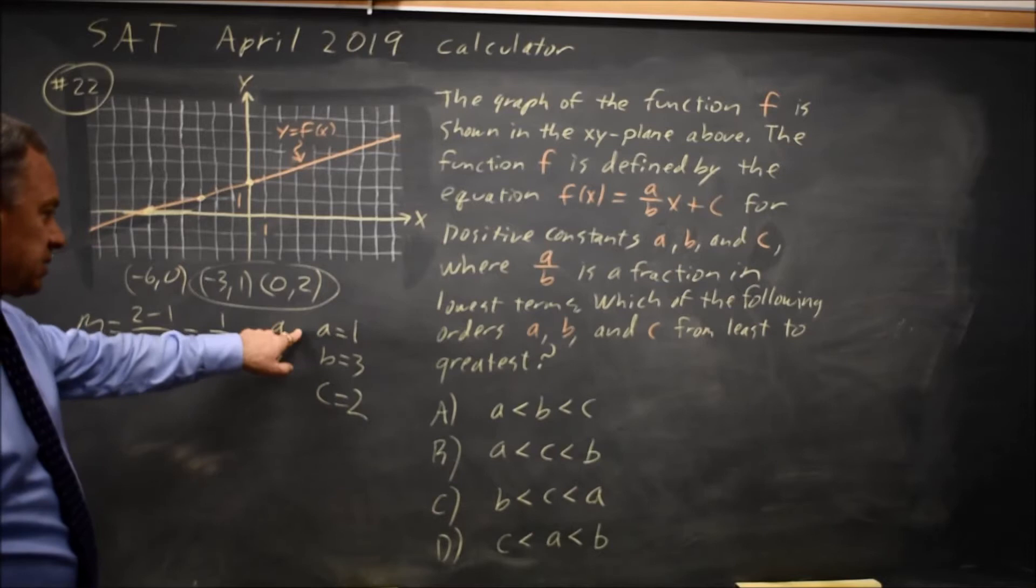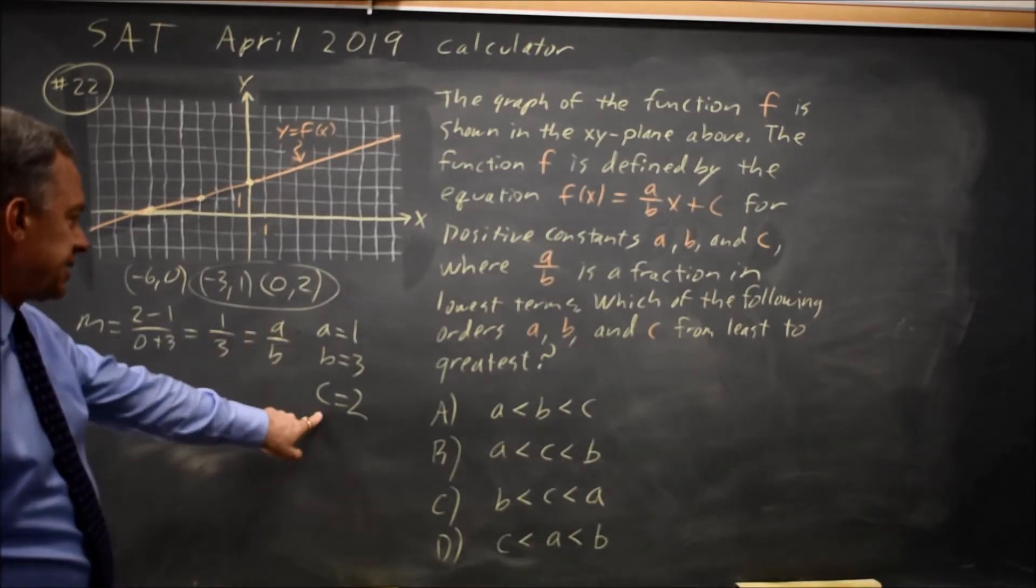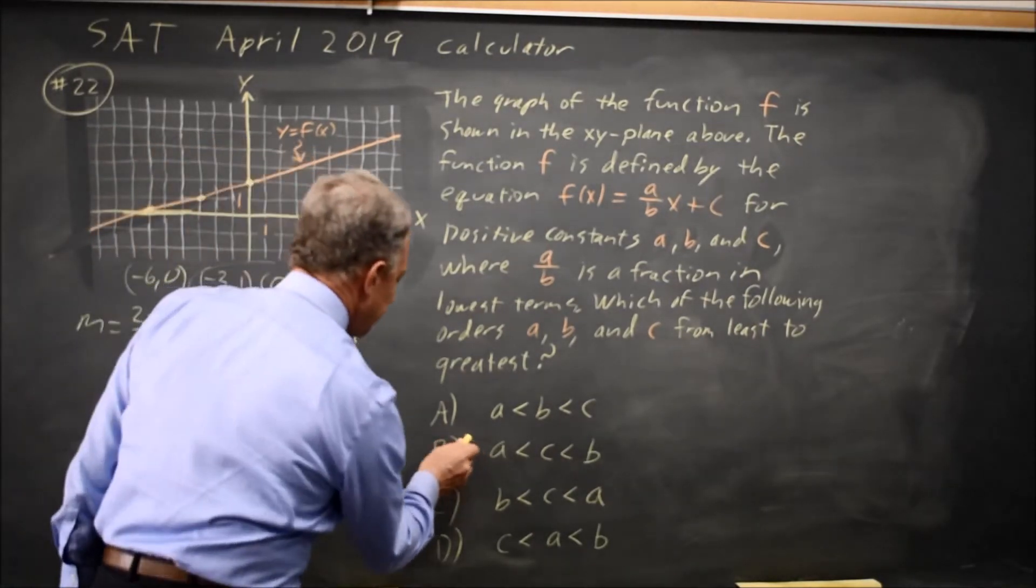So a is the smallest, c is in the middle, and b is the largest. That would be choice b.